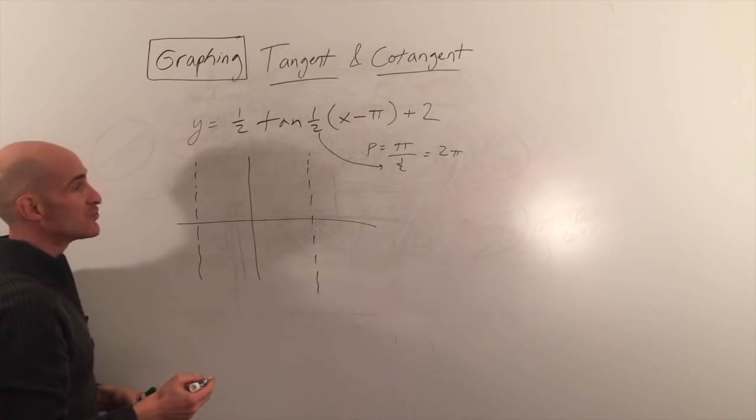With a period of 2 pi, half is on the right of the y-axis and half on the left, giving asymptotes at pi and negative pi. Dividing in half again gives midway points at pi over 2 and negative pi over 2. The amplitude is one half, so the graph reaches up to one half and down to negative one half.